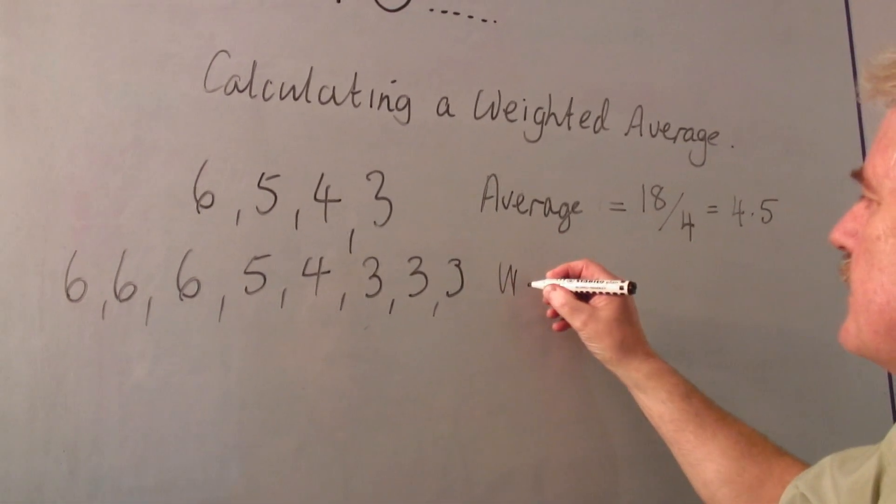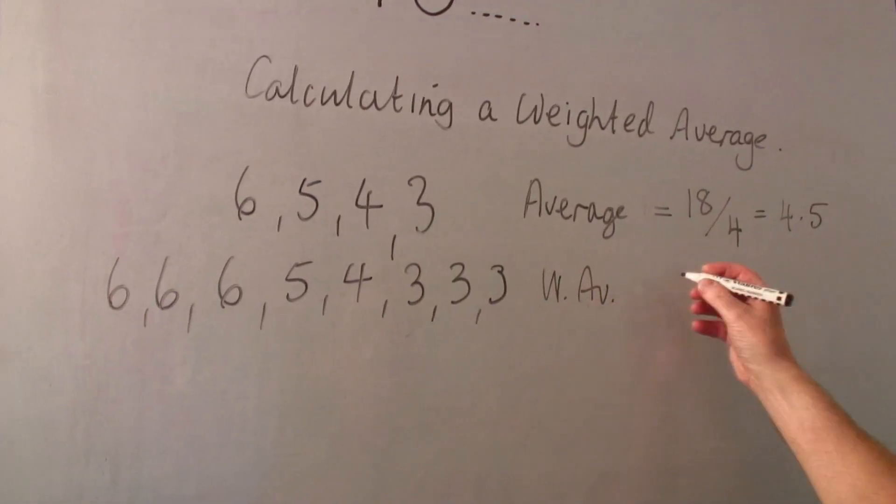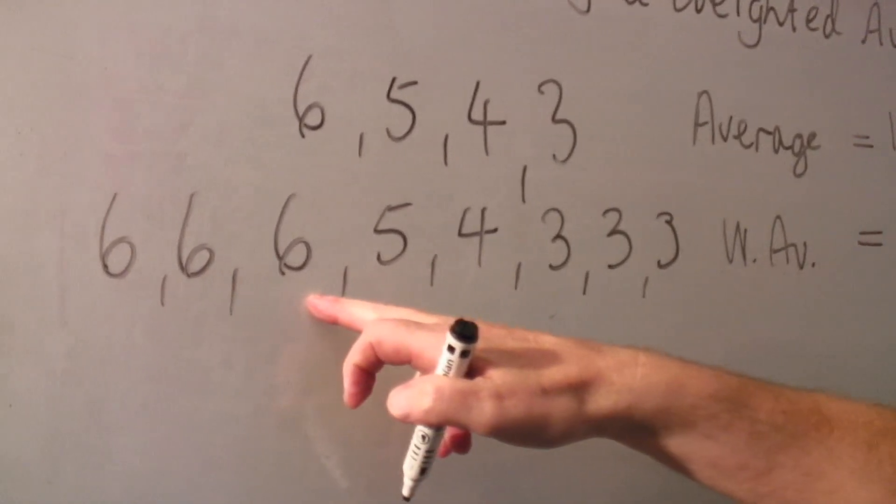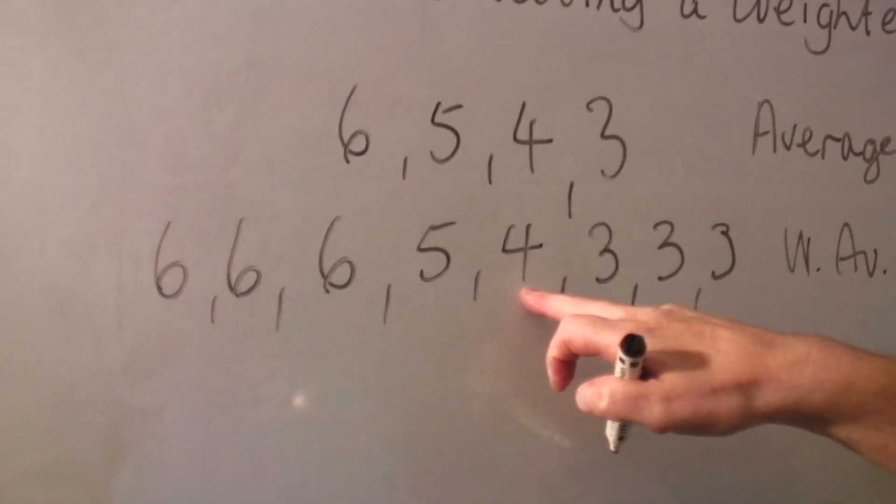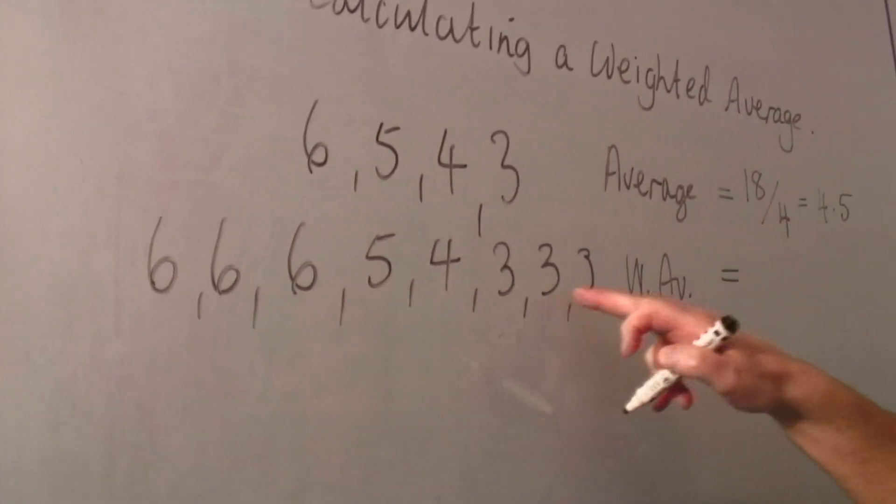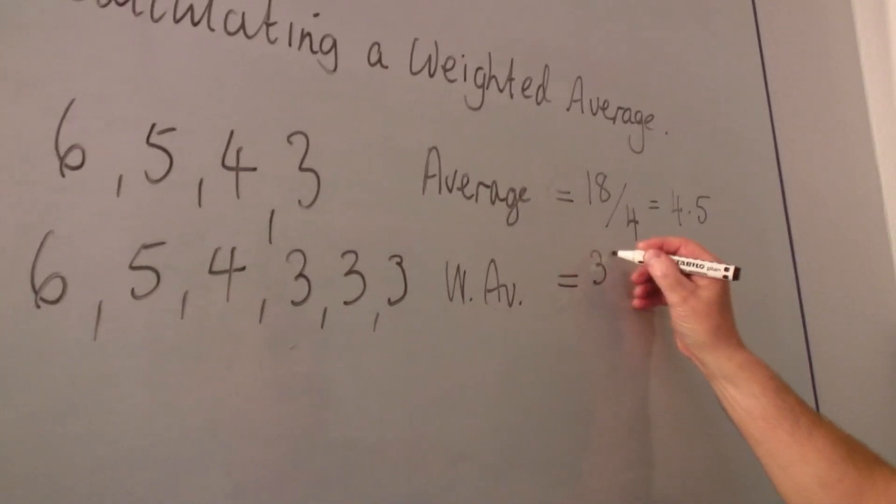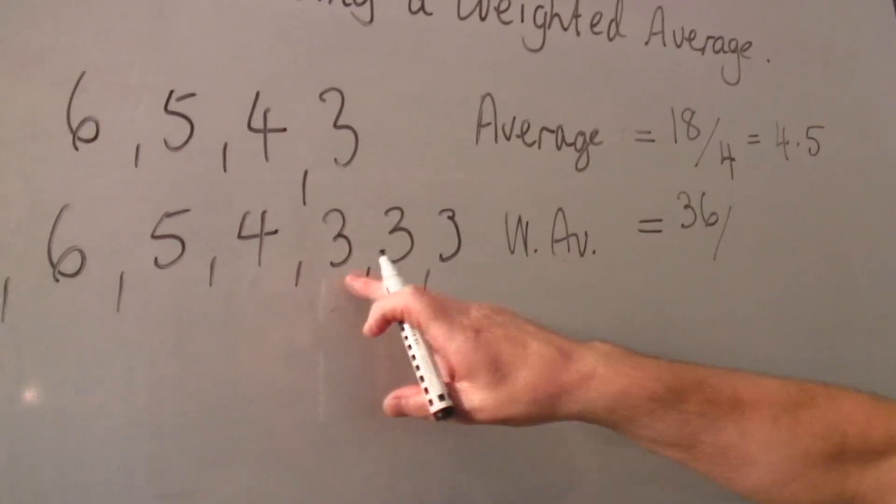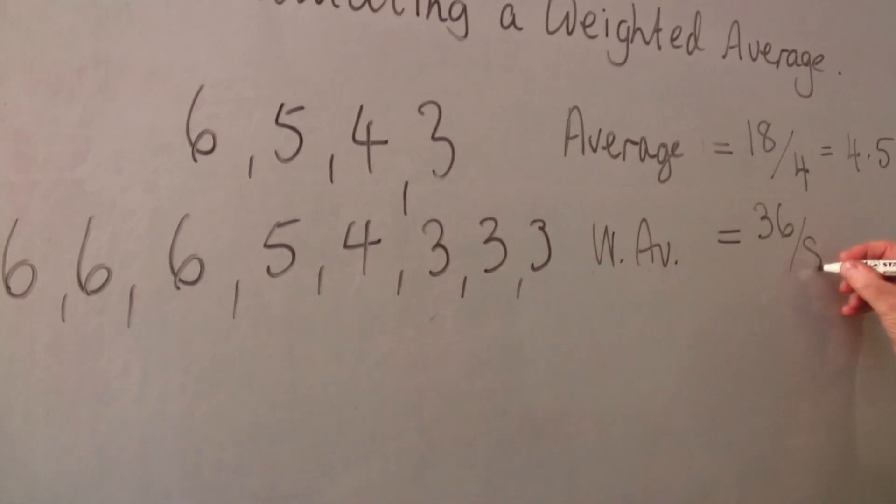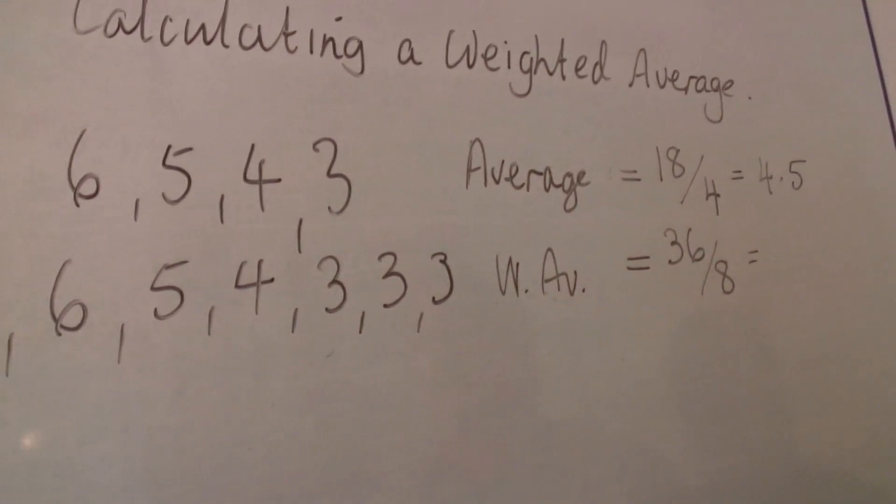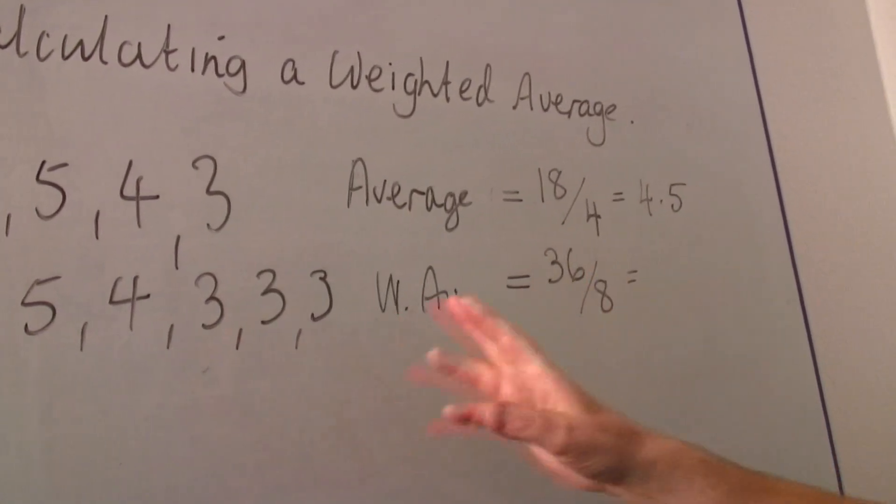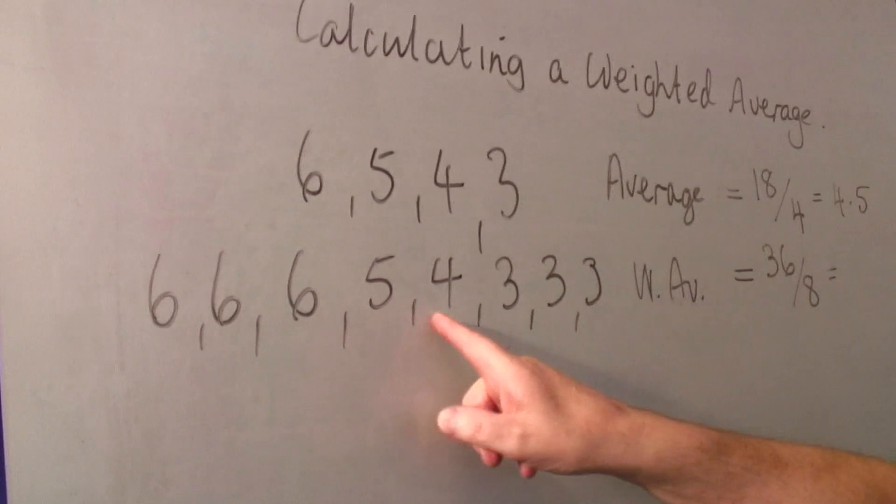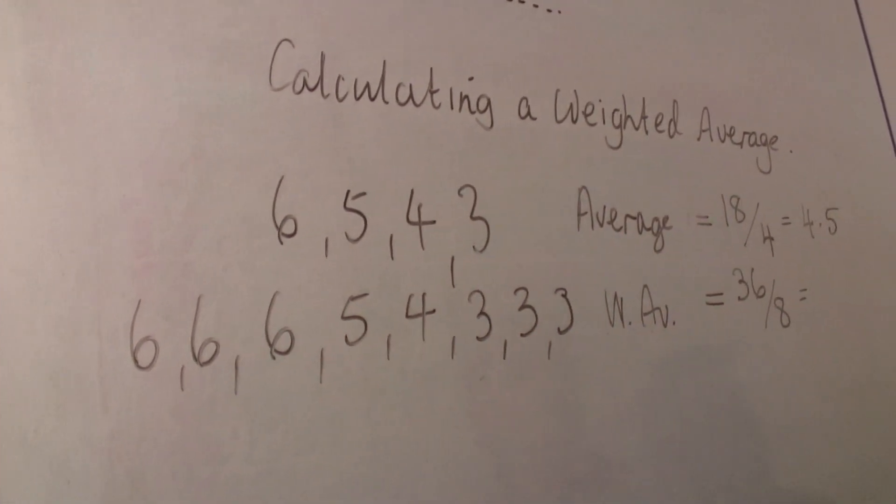So the weighted average of these, which is the same as the average, is eighteen plus nine, which is twenty-seven, thirty-six in this case, but divided by three, six, eight. And we've got therefore twice the number of numbers. But there are more threes and more sixes and just one each of five and four.